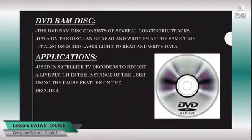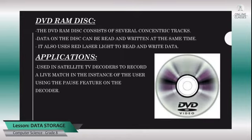Within the DVD family, there is one more type called DVD RAM. It is made up of several concentric tracks. The special feature of DVD RAM is you can write and read the contents at the same time. It makes use of red laser to read and write data. Its most important application is in satellite TVs — you can record live matches in real time, and if you want to pause a live match, you can pause it while the recording continues.